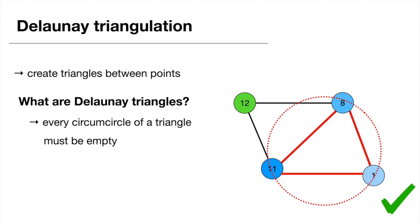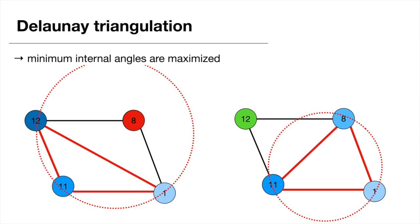A side effect of this empty circum circle criterion is that Delaunay triangles are well-shaped because minimum internal angles are maximized. The non-Delaunay option has a much smaller minimal internal angle than the Delaunay triangulation. This preference for large internal angles over small ones helps avoid sliver triangles — really long and thin triangles with extremely acute angles — which are not great for interpolation. For more detail, I'll link a good five-part video series on Delaunay triangulation in the description.